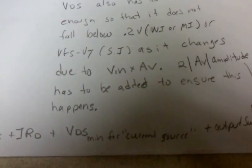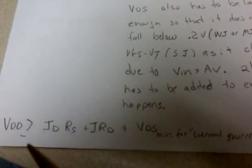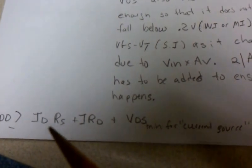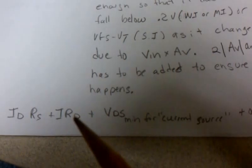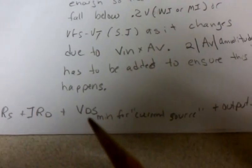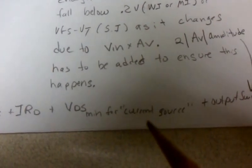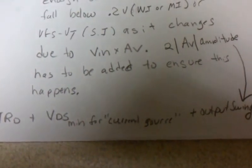you don't leave saturation. So really you just have to make sure that VDD is greater than the source resistance drop, the drain resistance drop, the VDS min to keep in your current source mode, and plus your output swing.